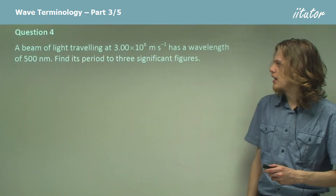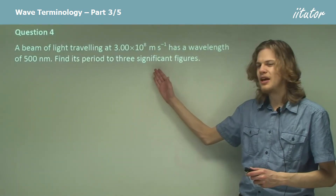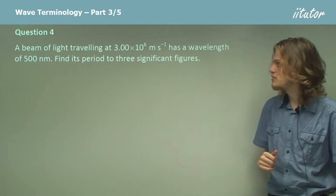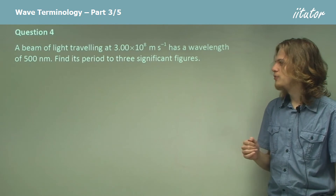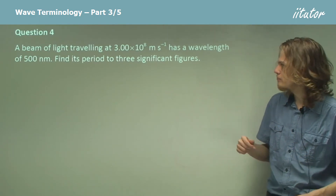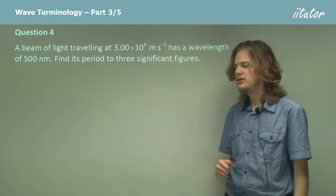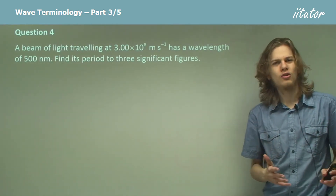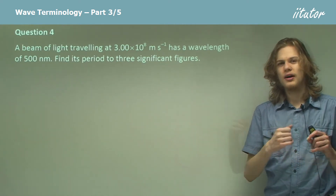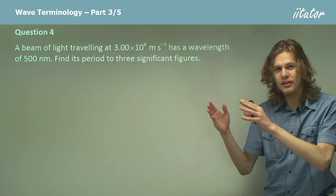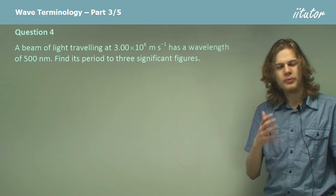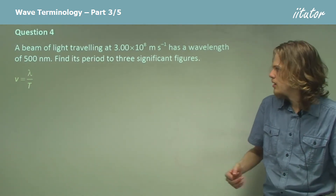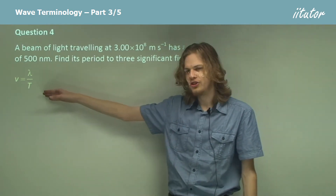A beam of light travelling at 3 times 10 to the 8 meters per second — which is a very fast speed, 300 million meters per second — has a wavelength of 500 nanometers, a very small wavelength. Find its period to three significant figures. Remember that the velocity of a wave is given by distance over time, that is wavelength over period. So the period is what we're trying to find.